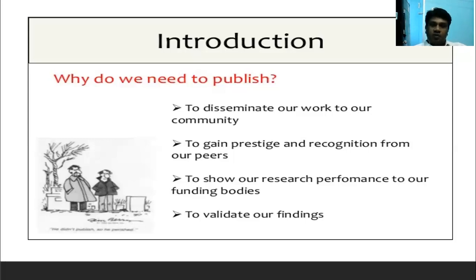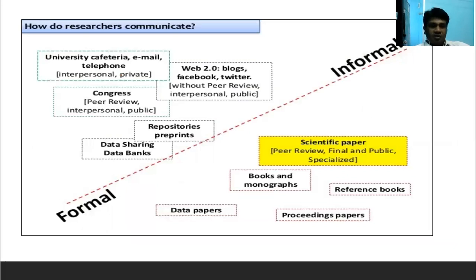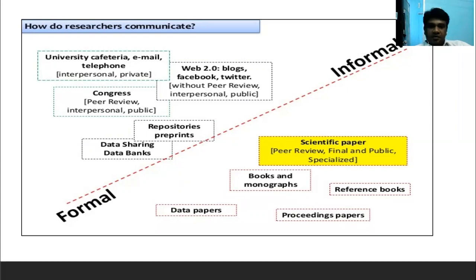Then, to show our research performance to our funding body. If your research paper addresses the current situation and provides a solution to current problems, you will automatically get funding. To validate our findings — this is how researchers communicate. Researchers communicate by two methods: formal and informal. Formal is a controlled environment where researchers communicate through peer review, controlled authorship, and scientific papers. Informal is an uncontrolled environment.